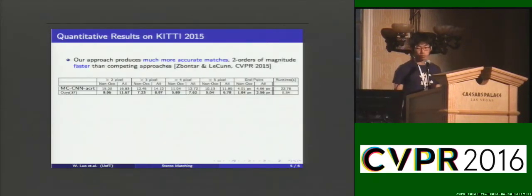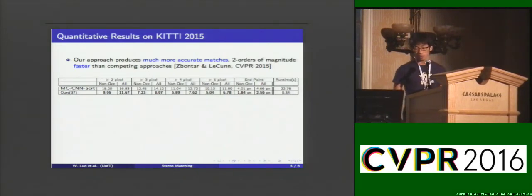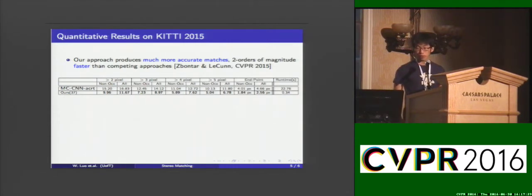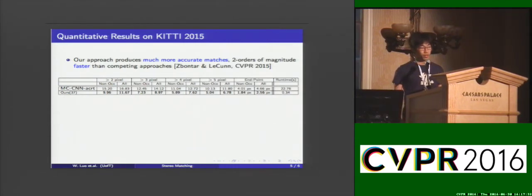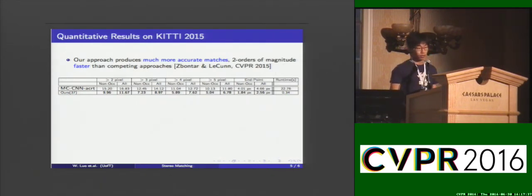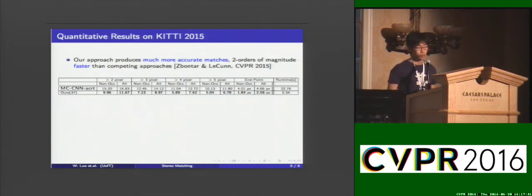Here are some quantitative results on KITTI 2015. As we can see, our approach produces much more accurate matches. For example, the 3-pixel error improves from 12% to 7%. The speed is also two orders of magnitude faster than competing methods, improving from 22 seconds to 0.3 seconds.